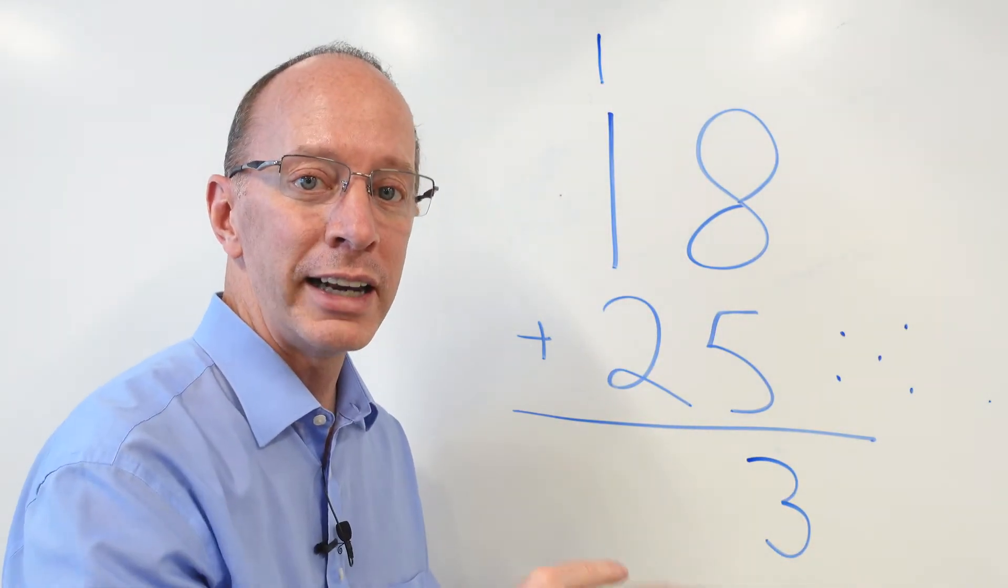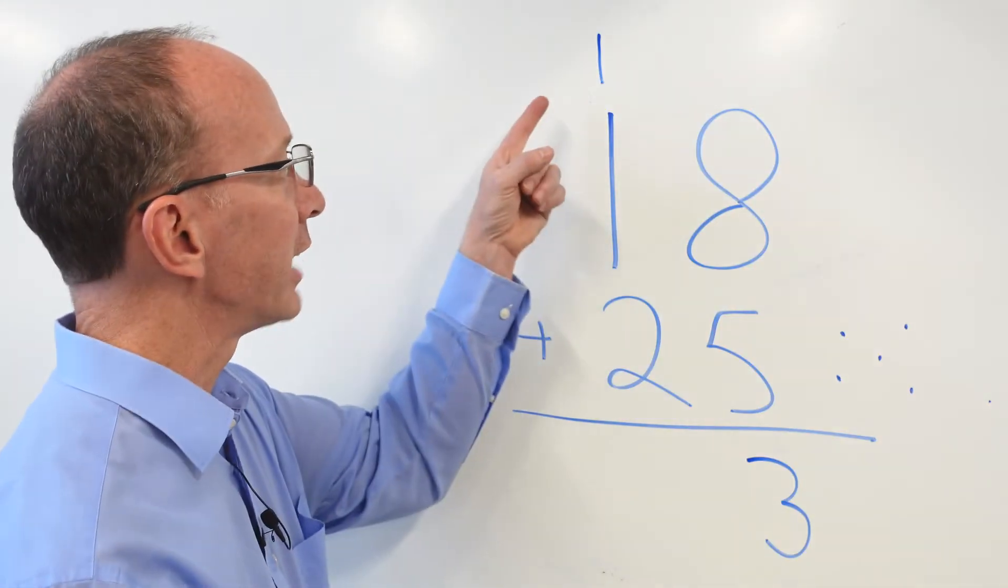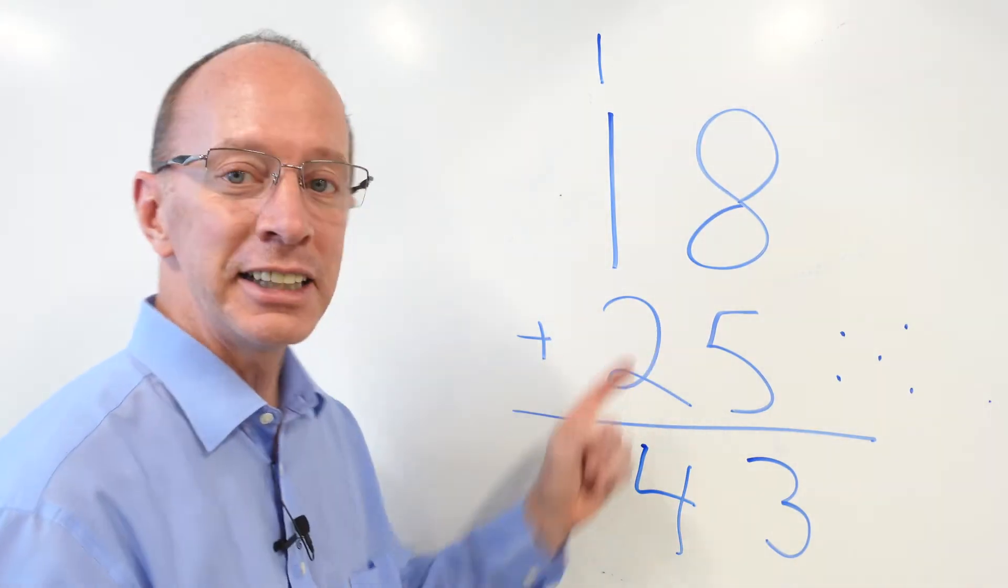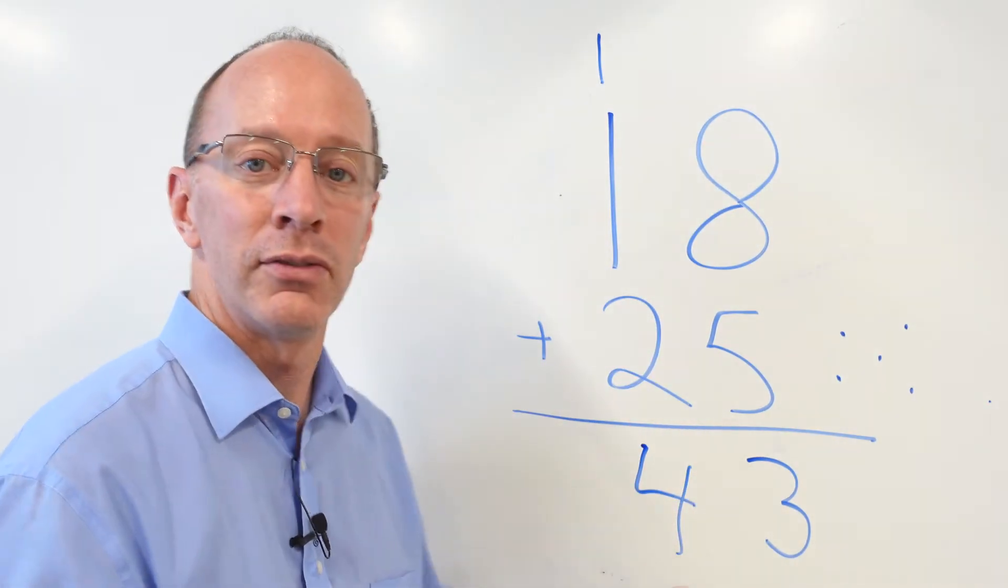Now, what do I do? I regrouped already. Now I'm going to add the tens. Let's add the tens. One, two, three, four. Just like that. Eighteen plus twenty-five equals forty-three.